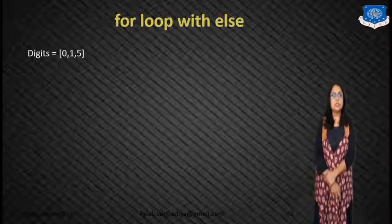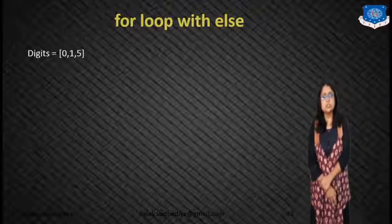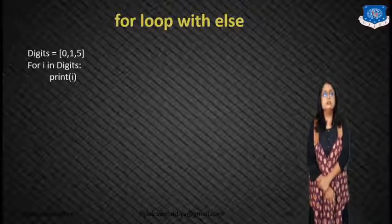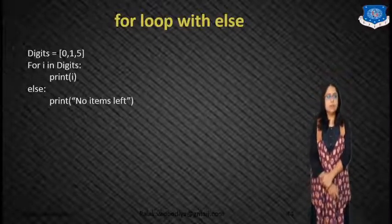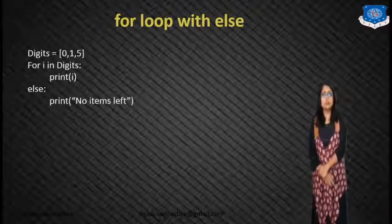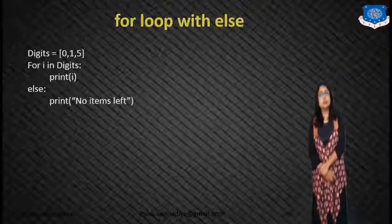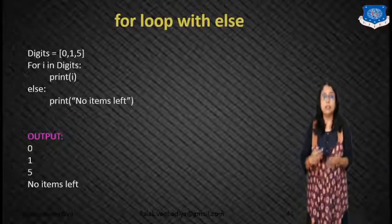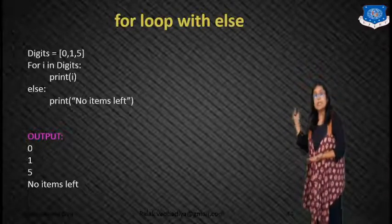To see this, we will discuss an example. Here the digits are 0, 1, and 5. I take one list and the name of the list is digits. 'For i in digits', then print i. Else print 'no item left'. So what will happen? One by one it will check the items present in digits and print them. First it takes 0, then prints 0. Then 1, then prints 1. Then 5, then prints 5. Now there is no item left inside the digit, so the else part executes. If you see the output, that is 0, 1, 5, and then you will get 'no item left'. This is how you can use else in a for loop.